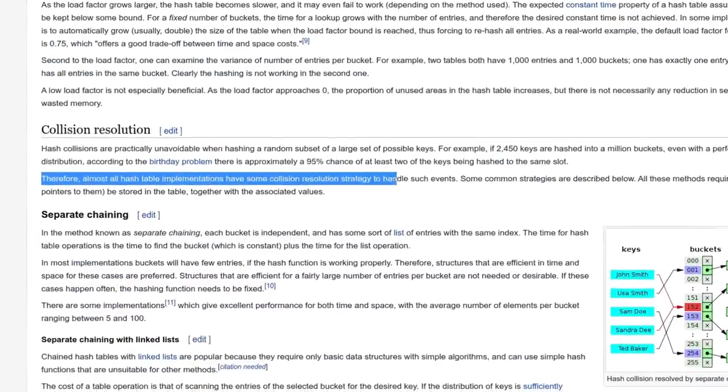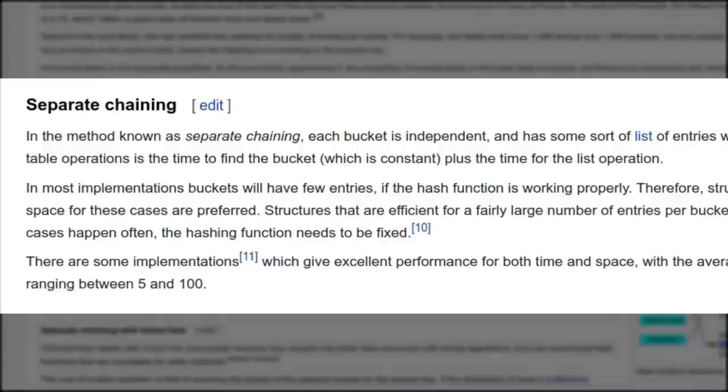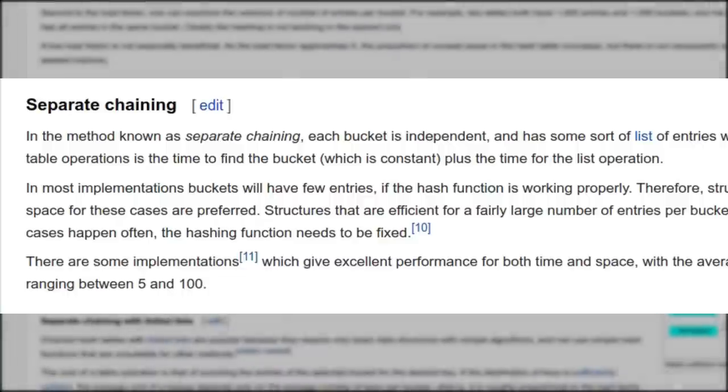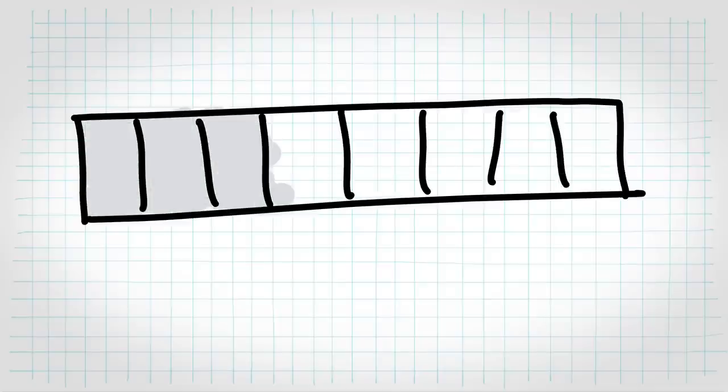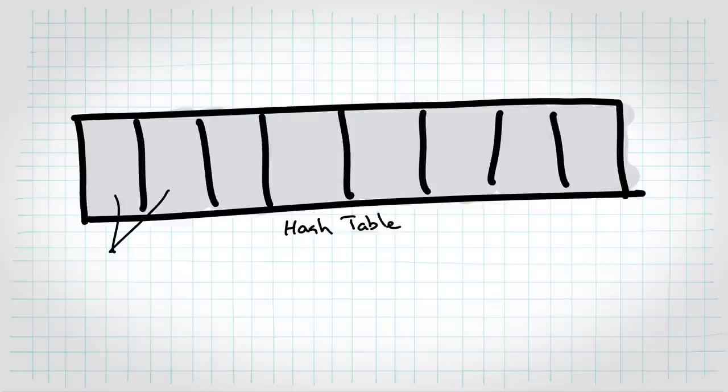And there are a couple major approaches that are used in this case. The first of which is chaining, or separate chaining. And the concept is simple. Instead of allowing you just to store one item at each bucket in the array, or the hash table, here's our hash table again.